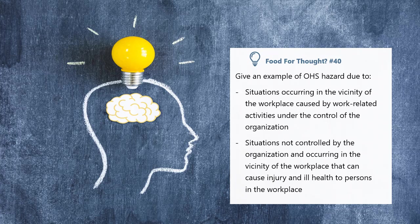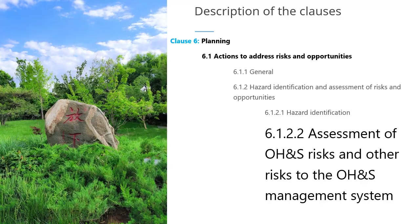The example for the second situation could be: an excavation activity is going on near the boundary wall of the organization, or there is a small chemical manufacturing facility nearby and the airborne toxic chemical may travel to the workplace, or there is noise from a nearby factory, etc.